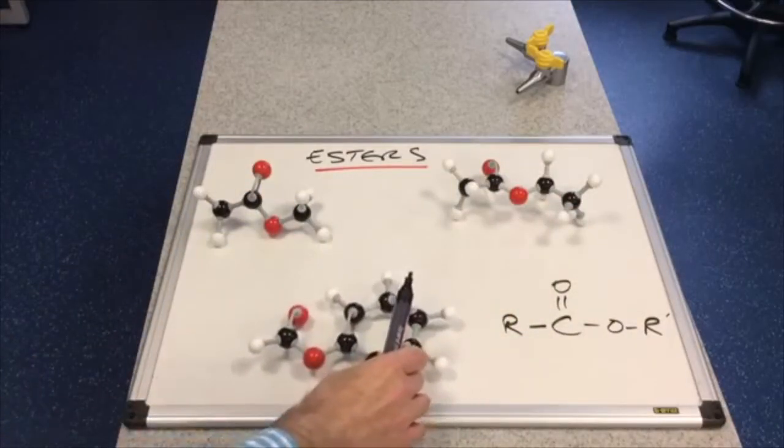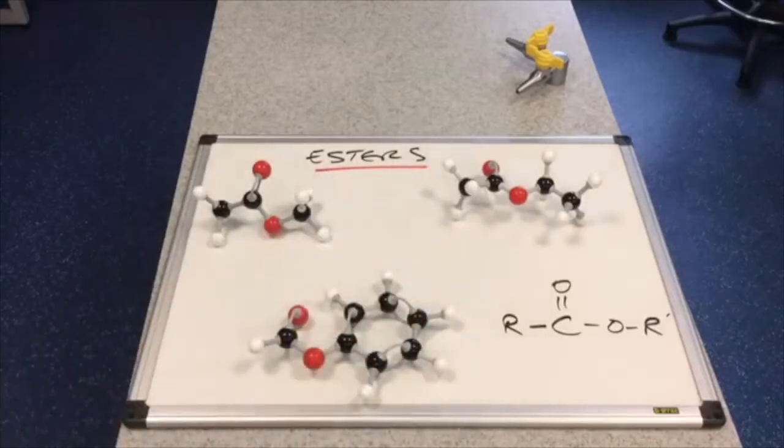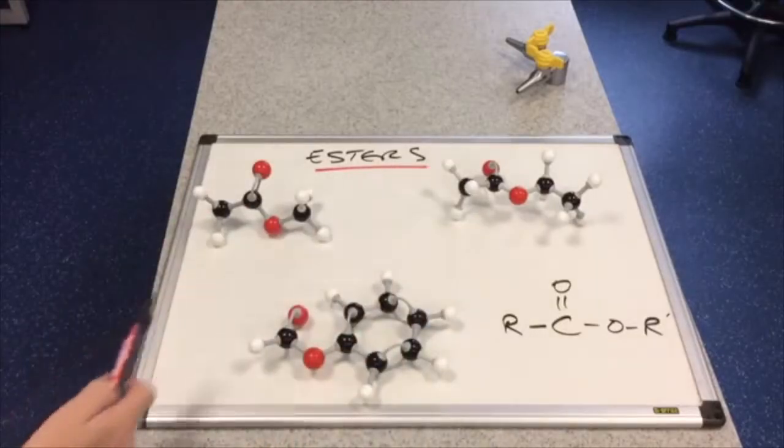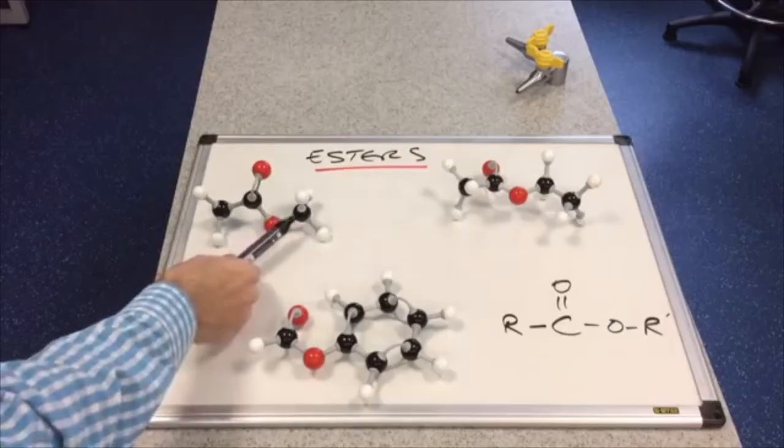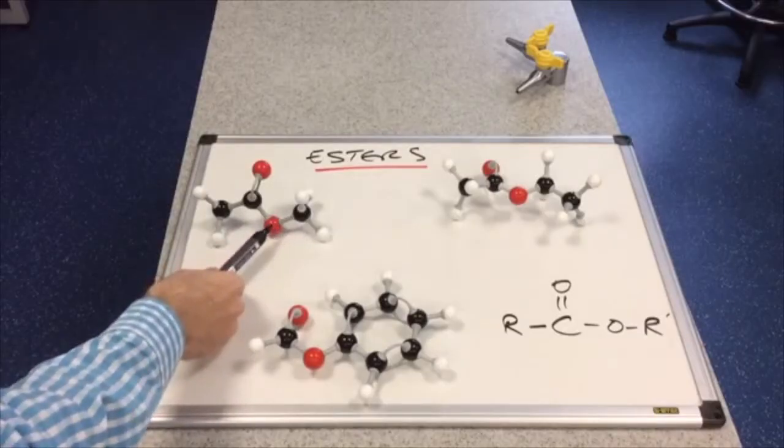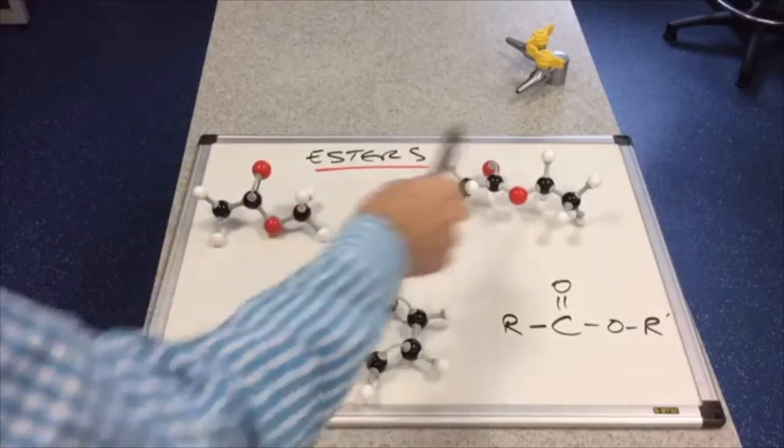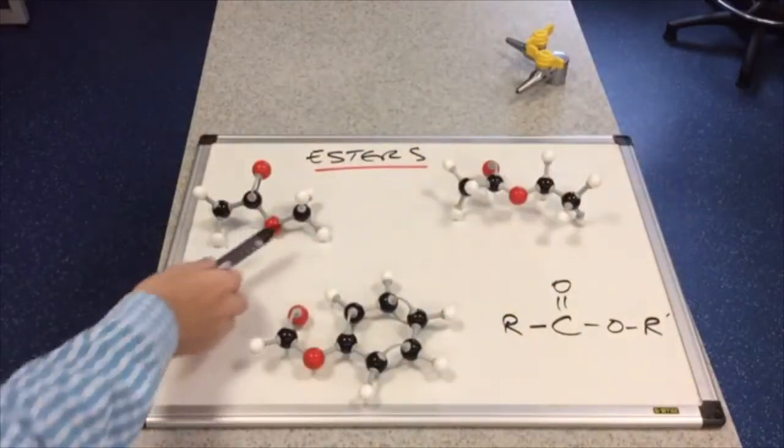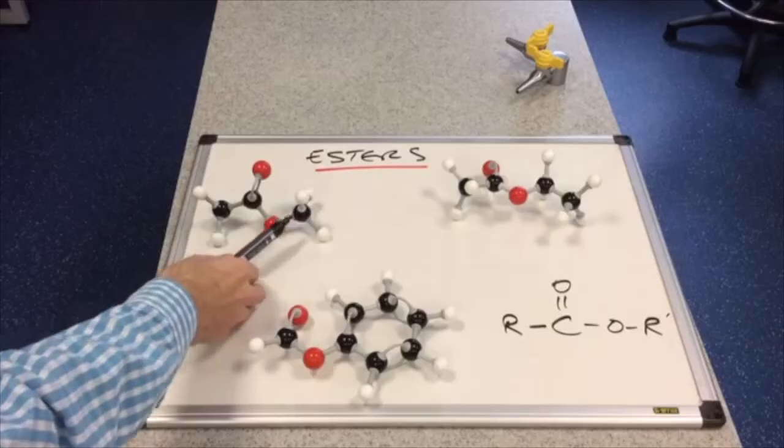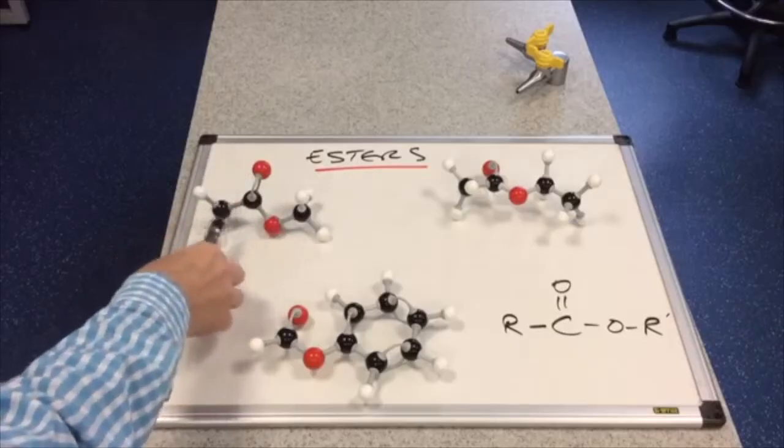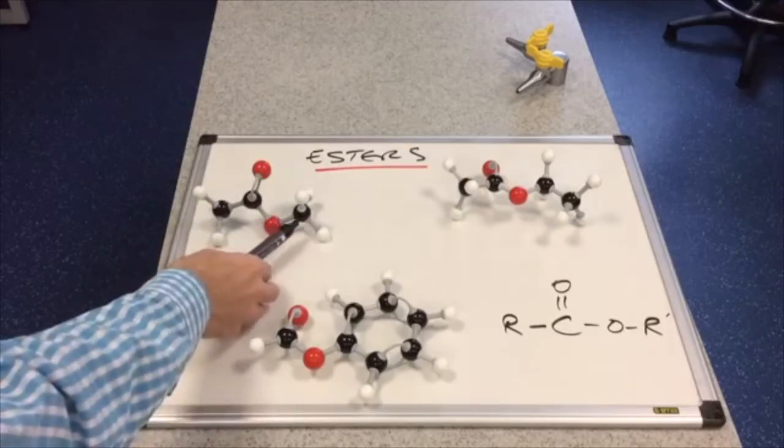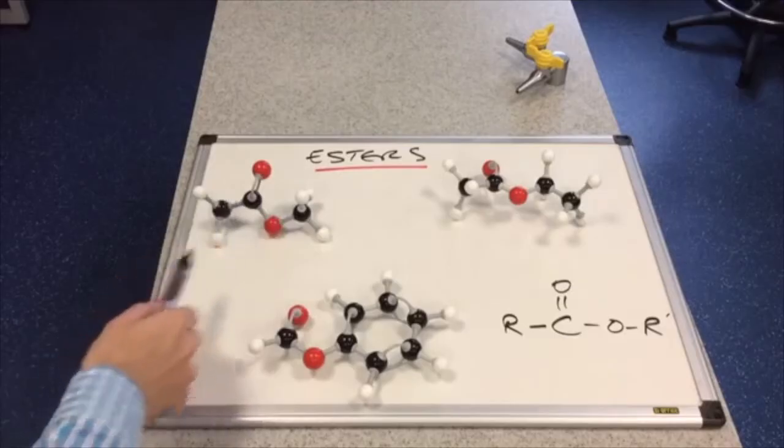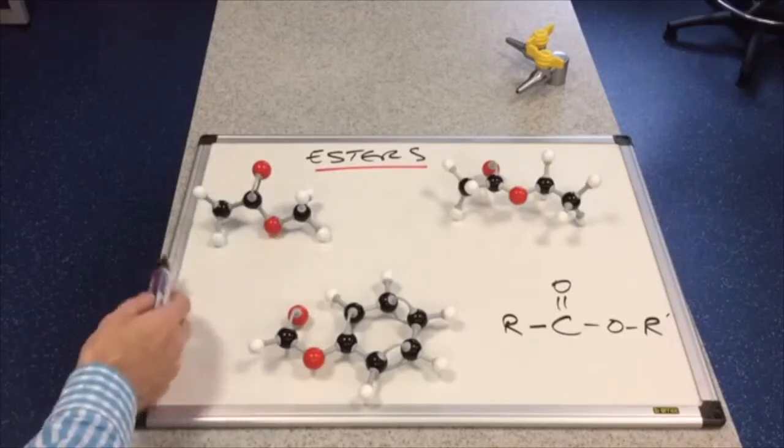So we'll name these three and we'll put the names on the board. When we're naming them we need to look at the R group that's attached to the single bonded oxygen. So the way I've positioned these esters here, that's the R group on the right hand side. So we've got a methyl group here and then we look at the other part of the molecule. So methyl, one, two, this is called methyl ethanoate.